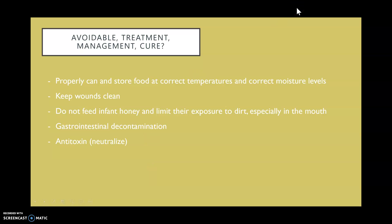When it comes to avoiding botulism, if you're canning or storing your food in jars, you really want to properly do that at the correct temperatures so that you can kill off any bacteria. Moisture levels also matter. And this even goes for if you're just airtight sealing fish or any meats, especially meats, you really want to make sure that it's done correctly. You want to keep your wounds clean obviously. You don't want to feed your infants honey. You want to limit their exposure to dirt as well, especially in the mouth. Obviously you want your kids to have a good immune system and be exposed to things, but just be wary, that is a risk.